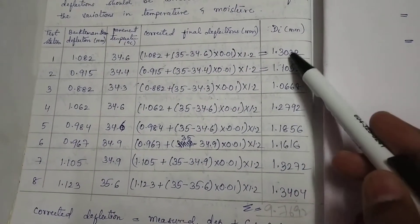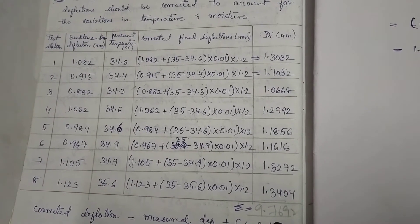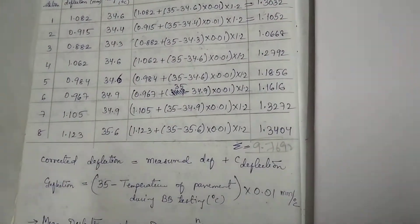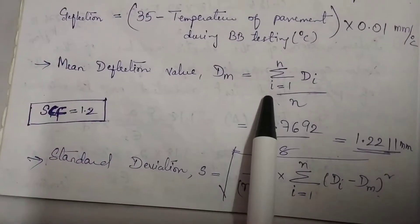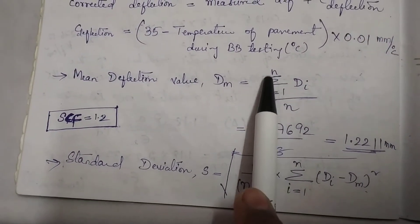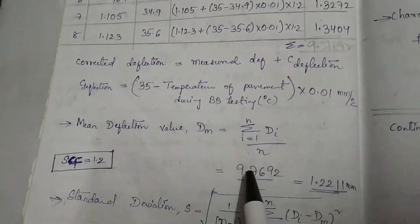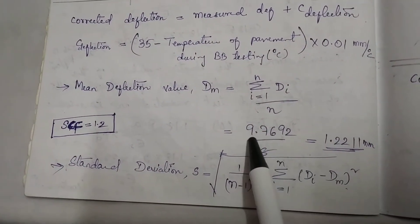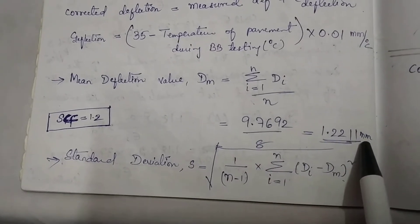Similarly we calculate Di for stations 2 through 8. After getting Di for each station, we sum all Di values, getting approximately 9.7. Next, we calculate the mean deflection value Dm using the formula: Dm equals summation of Di divided by n, where n is the number of test stations. With 8 stations, Dm equals 9.7 divided by 8, which equals 1.211 mm.